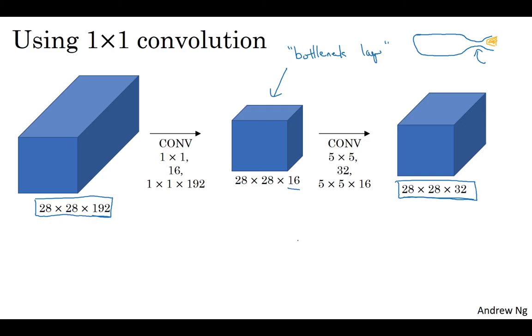Now let's look at the computational cost involved. To apply this 1x1 convolution, we have 16 filters. Each of the filters is going to be of dimension 1x1x192. This 192 matches that 192. The cost of computing this 28 by 28 by 16 volume is, you need this many outputs, and for each of them, you need to do 192 multiplications. If you multiply this out, this is about 2.4 million.